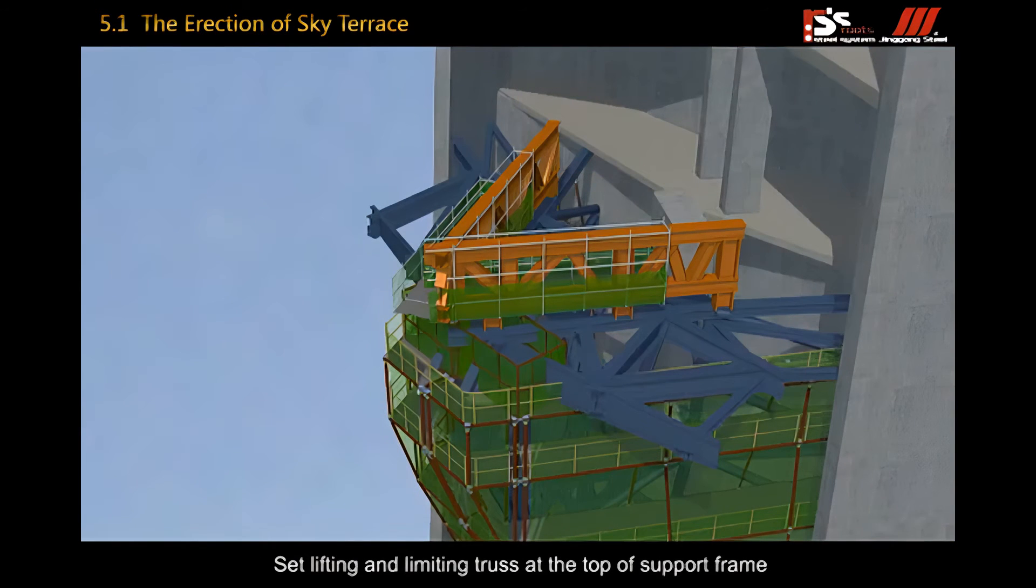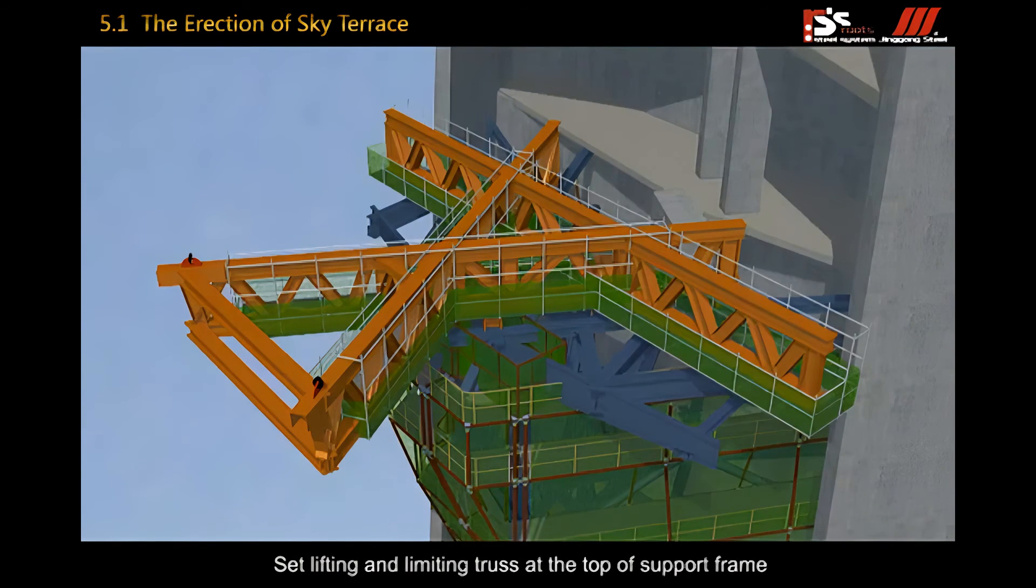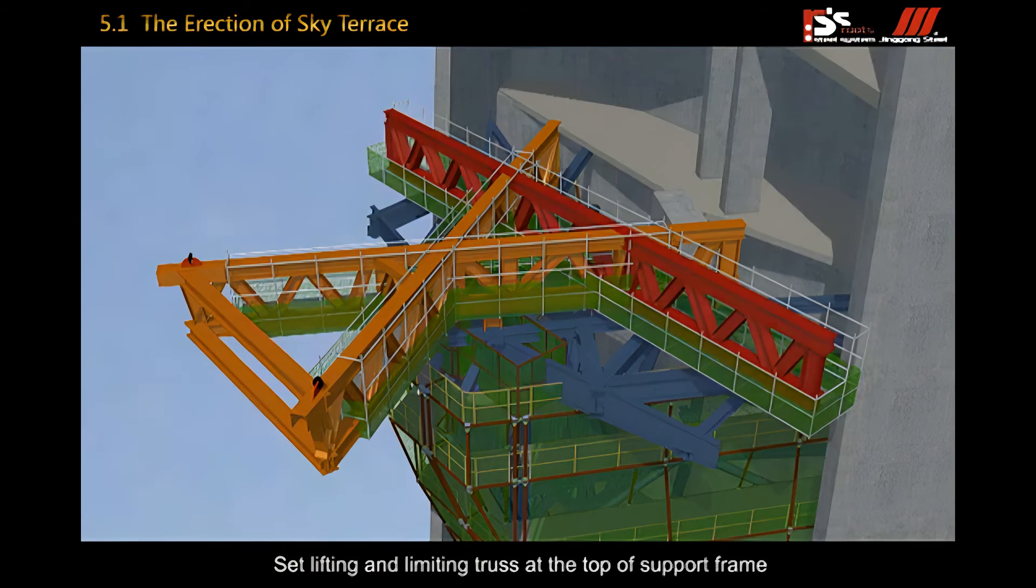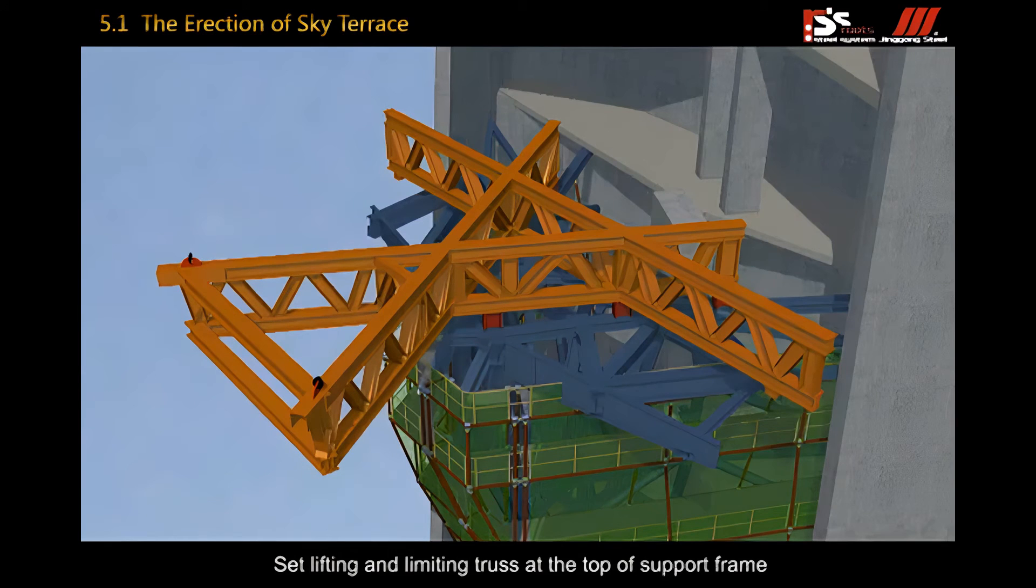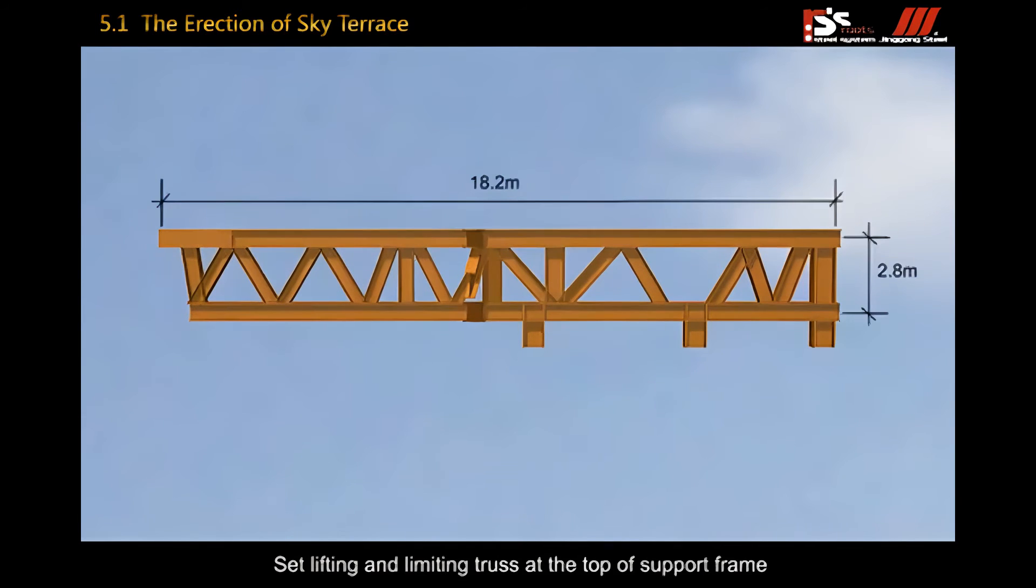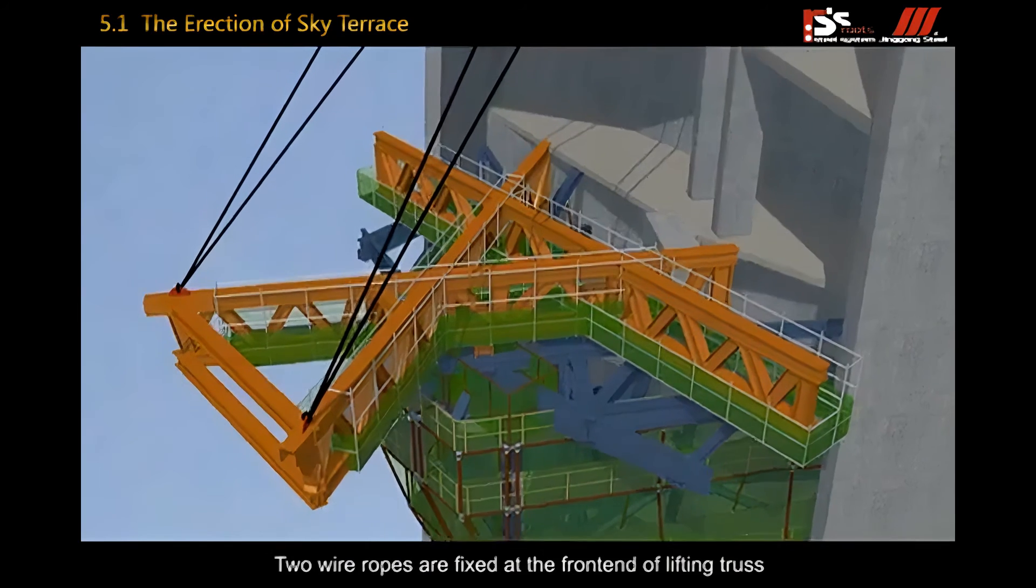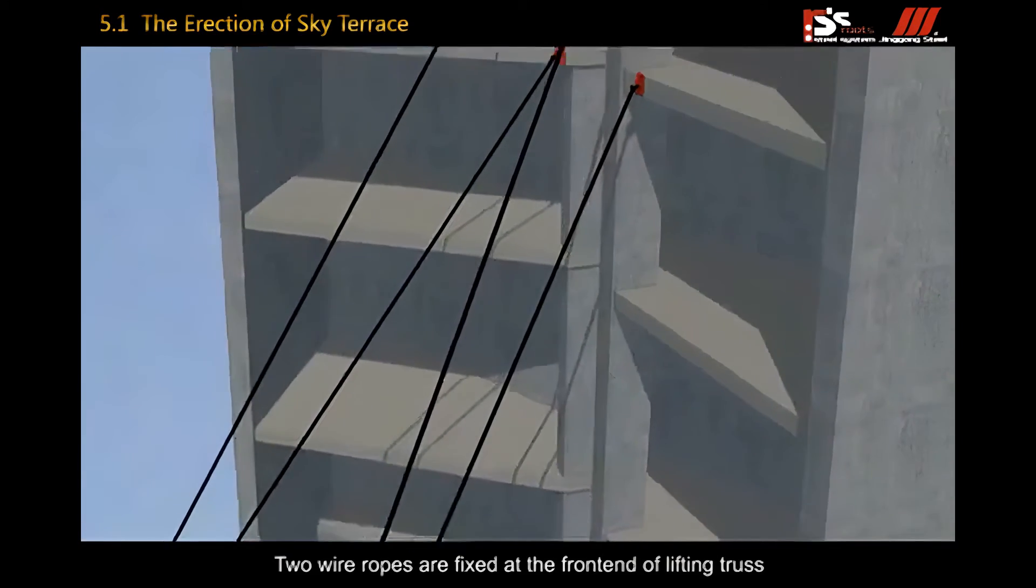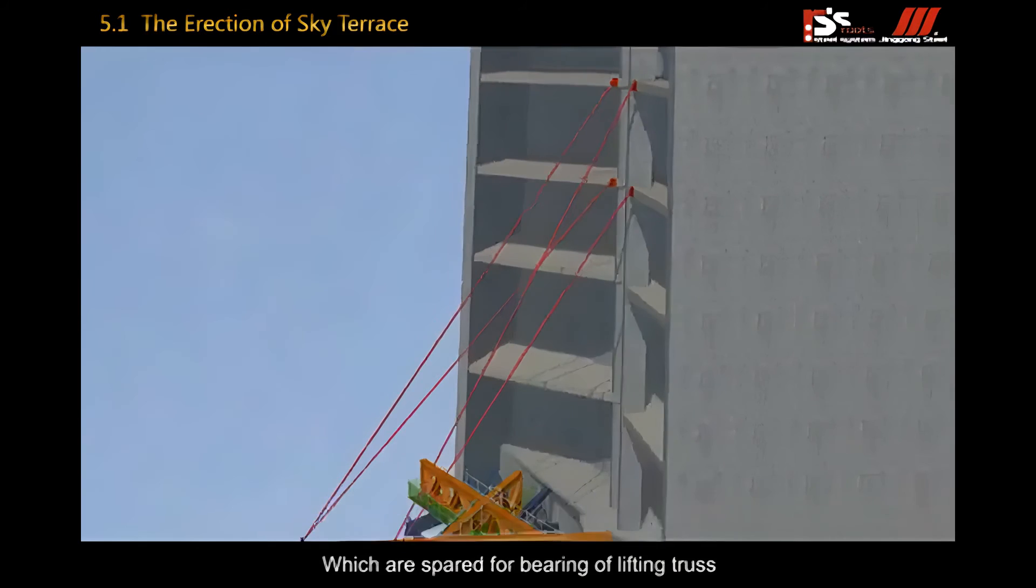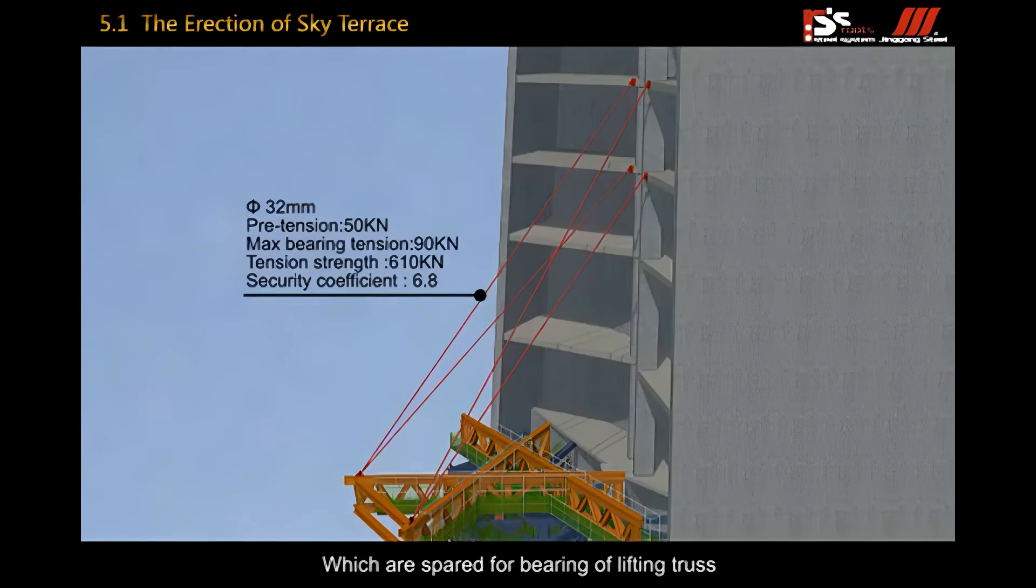Set lifting and limiting truss at the top of the support frame. Two wire ropes are fixed at the front end of lifting truss, pulling to the upper concrete wall of level 161 and level 162 which are prepared for bearing of the lifting truss.